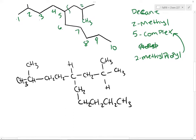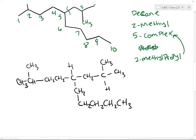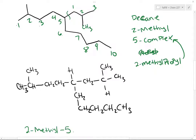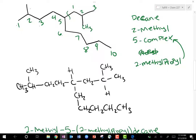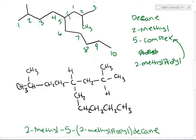That's all of my substituents. I can now put the full name together. I'm looking at a 5-(2-methylpropyl) and a 2-methyl. I'm going to list the 2-methyl first because they both start with methyl. So 2-methyl is my first substituent. Now I have a complex substituent at carbon 5, so I put the locant 5, open a parenthesis, give the name of the substituent: 2-methylpropyl. Close the parenthesis, finished naming that complex substituent. No more substituents, so I'm ready for the parent name, which is decane. So I have 2-methyl-5-(2-methylpropyl)decane.